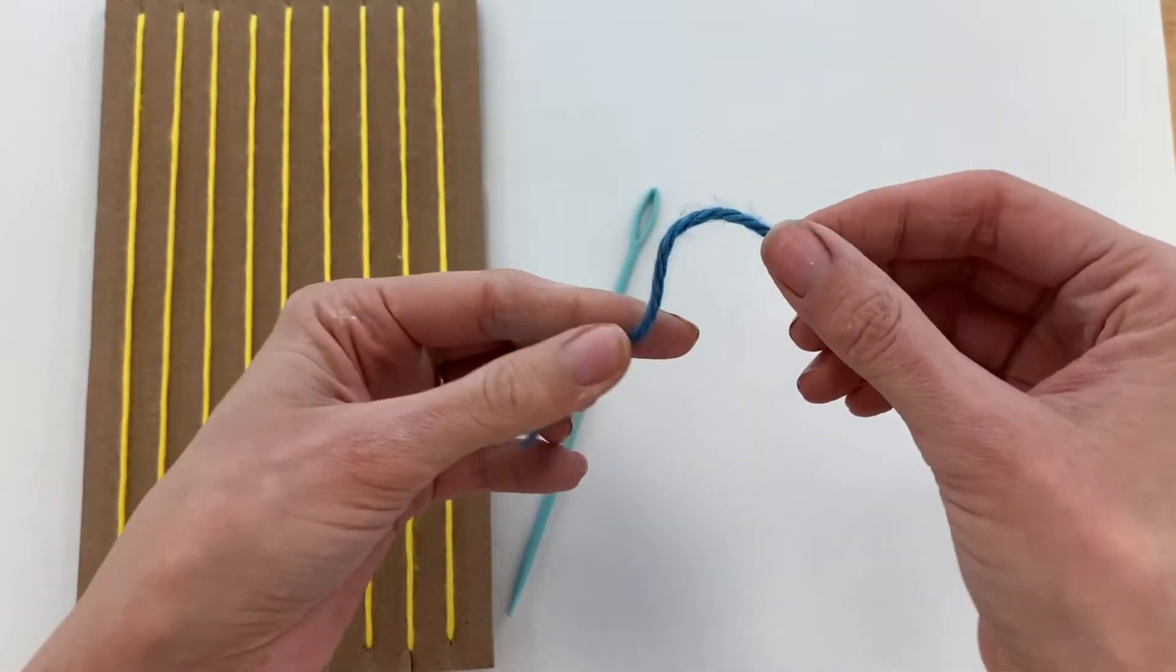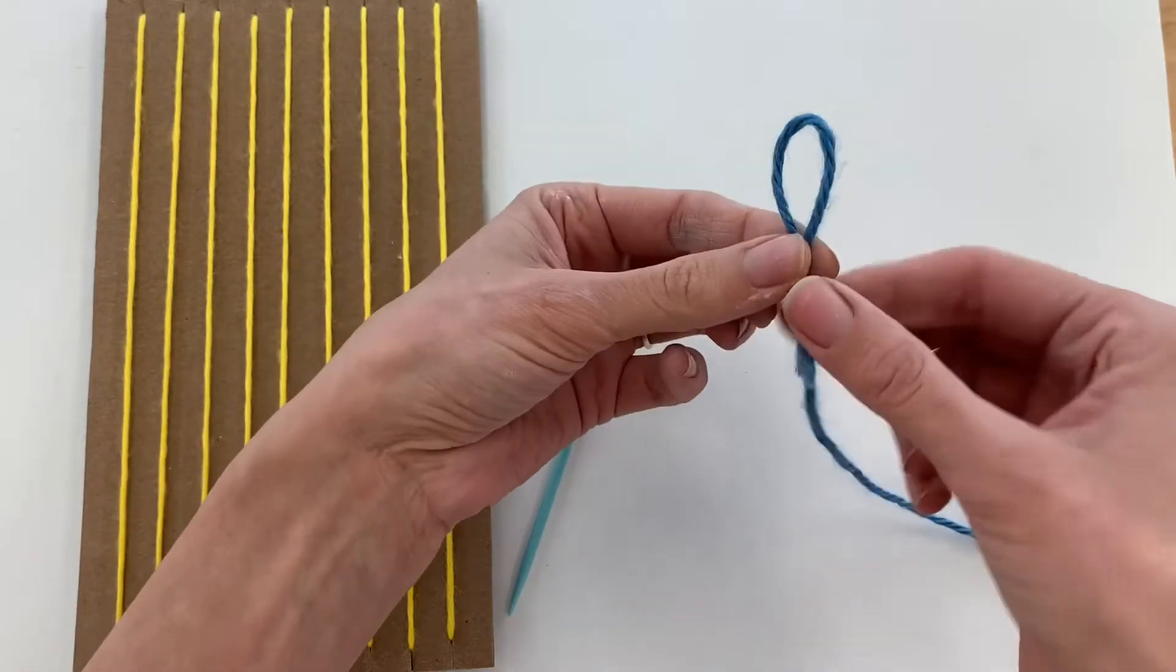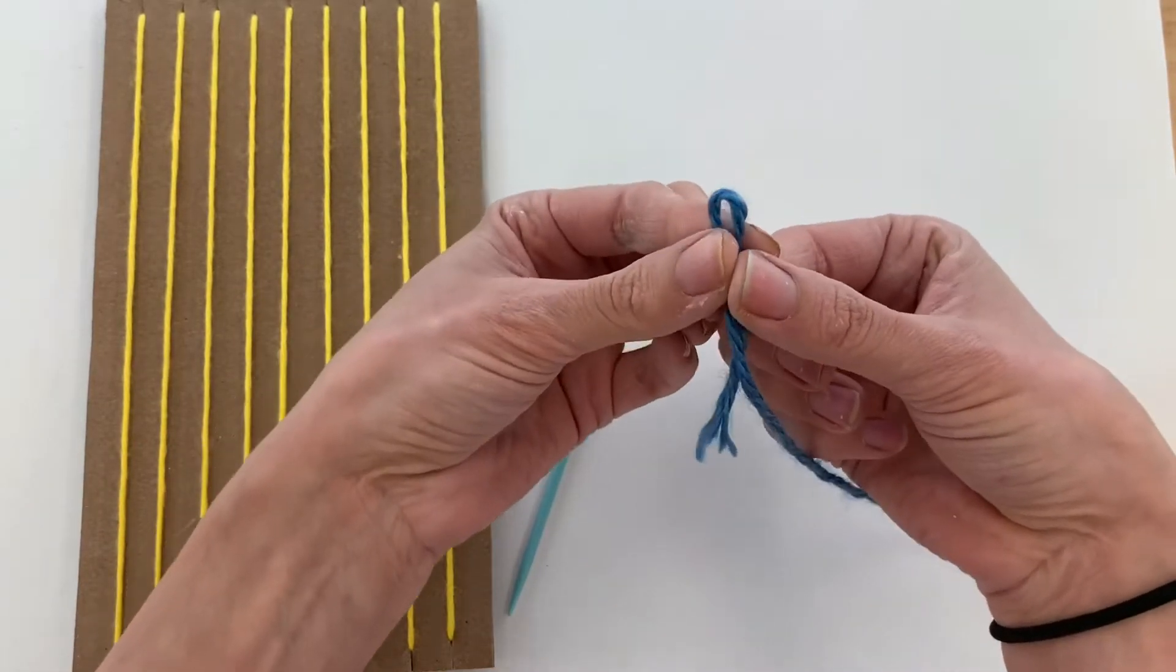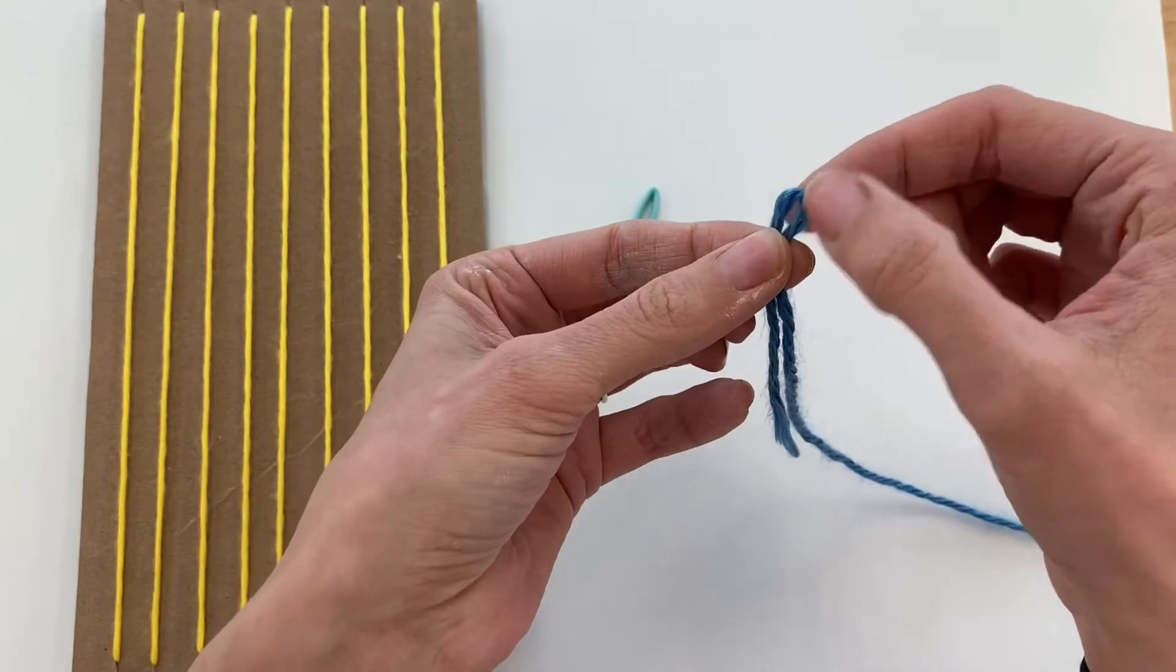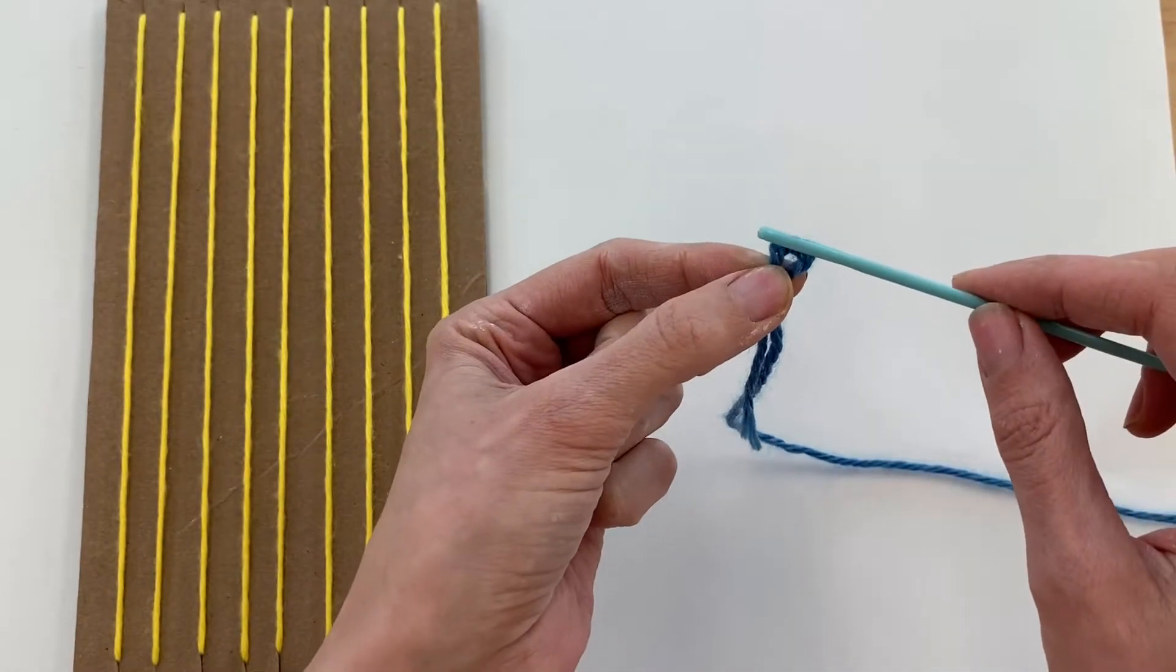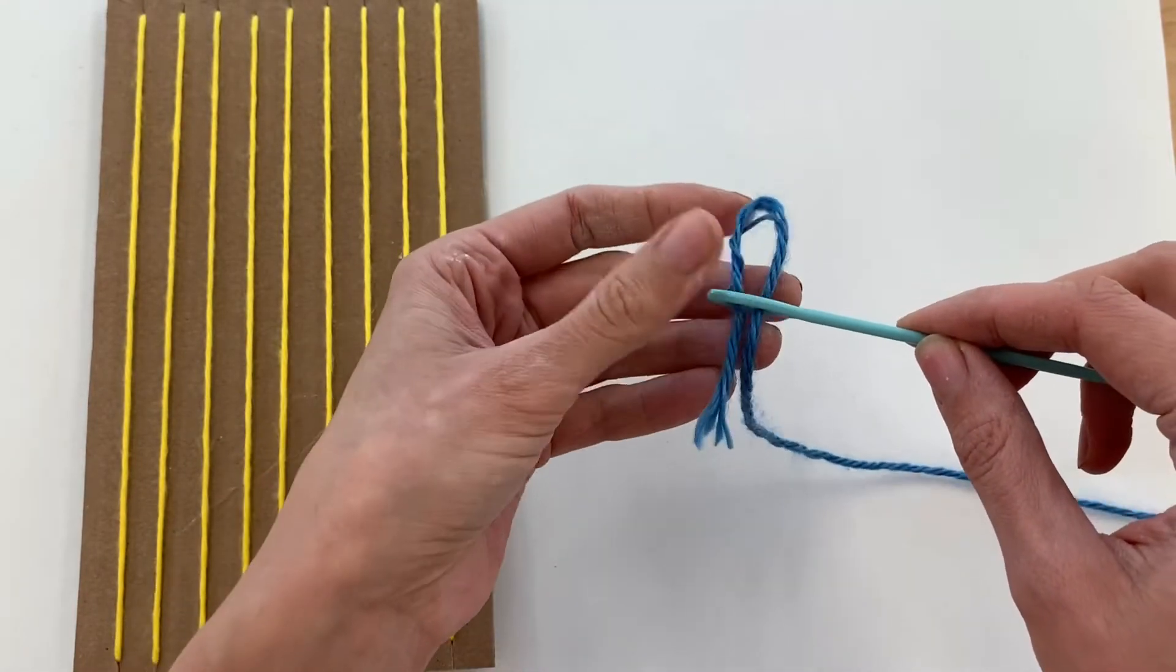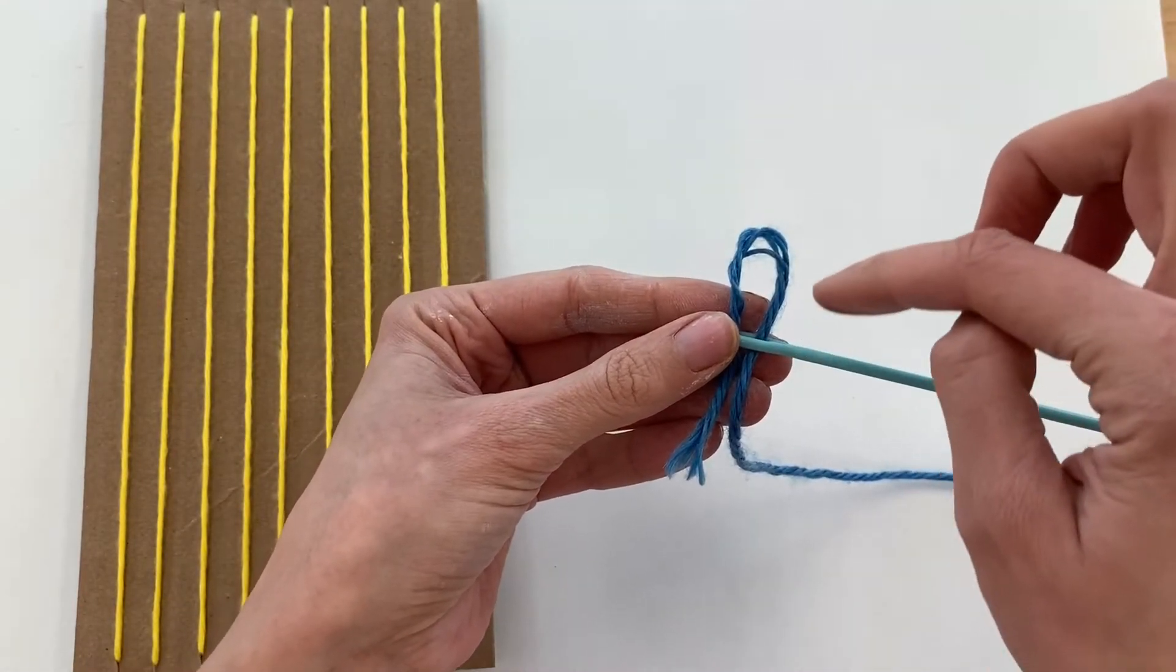And we're going to start by making a little loop on the end of our yarn. It's not too long here, it's a little bit less than my finger even. And then I'm going to make that little loop on the end kind of small. And that's going to go through the eye of my needle here. But I'm not going to pull it all the way through, I'm just going to leave this little loop here on the end.